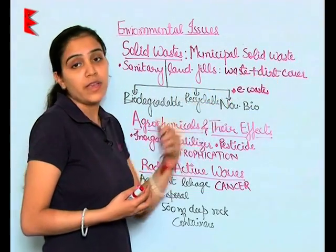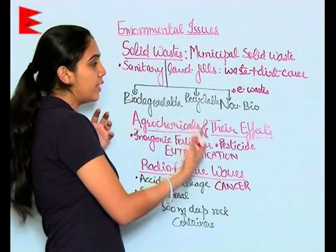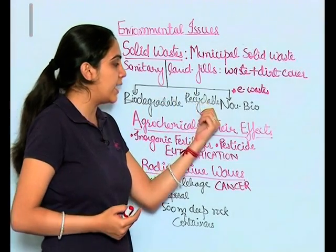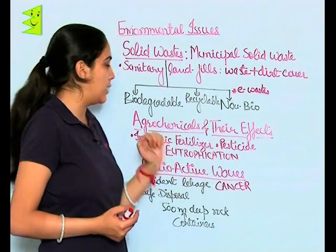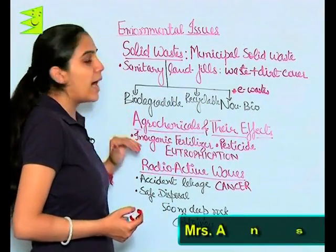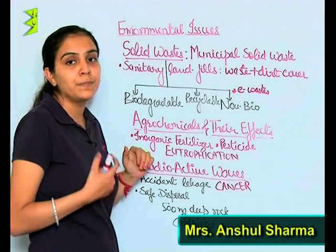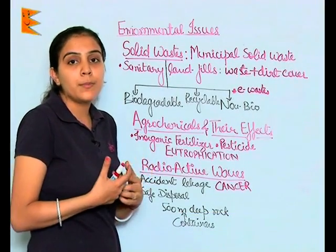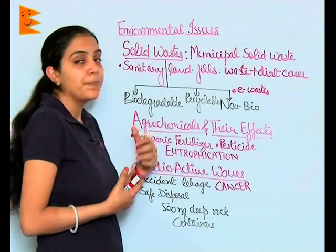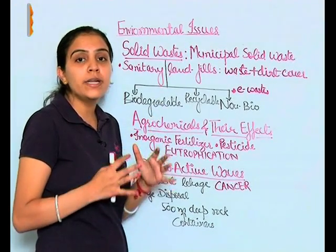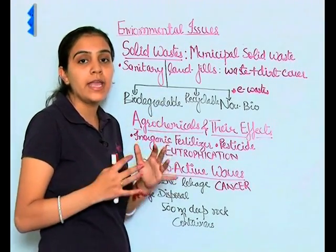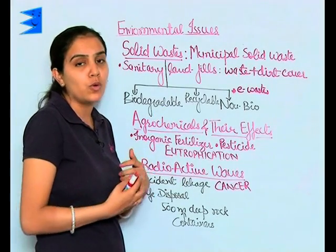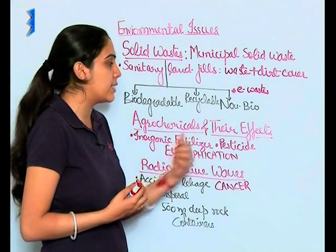These solid wastes may be of three types: biodegradable, recyclable, and non-biodegradable. Biodegradable solid waste includes peels of vegetables, fruits, paper, cloth, etc. These wastes are to be dumped in land and they can be decomposed by microorganisms.